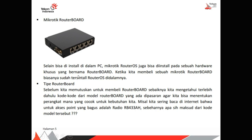Kemudian, tipe RouterBoard. Sebelum kita memutuskan untuk membeli RouterBoard, sebaiknya kita mengetahui terlebih dahulu kode-kode dari model RouterBoard yang ada di pasaran agar kita bisa menentukan perangkat mana yang cocok untuk kebutuhan kita. Misalkan kita sering baca di internet bahwa untuk access point yang bagus adalah Radio RouterBoard 433AH. Jadi kita harus paham dari kode-kode yang ada di perangkat tersebut sehingga kita bisa memahami sesuai dengan kebutuhan kita di lapangan.